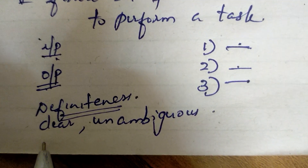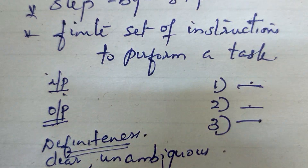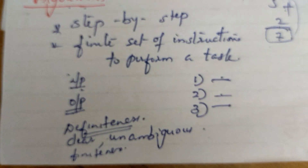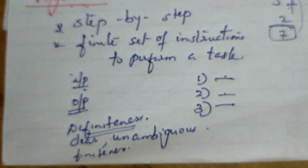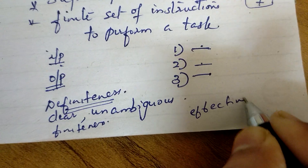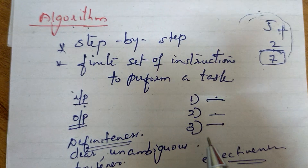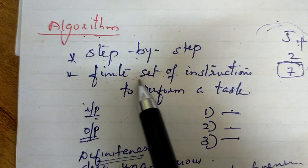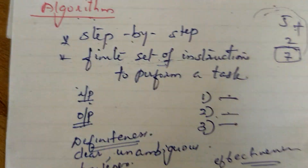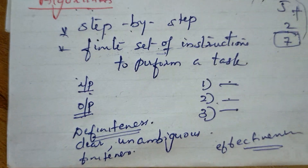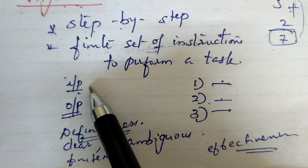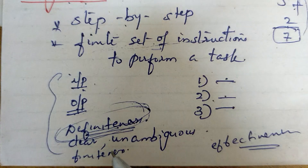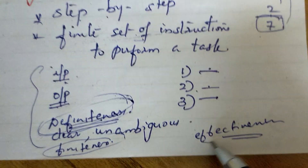The next property is finiteness. The algorithm must terminate after a finite number of steps — it cannot be infinite. After that, we need input, output, clear unambiguous instructions, a fixed number of instructions, and the steps must be feasible. That last property is called effectiveness.